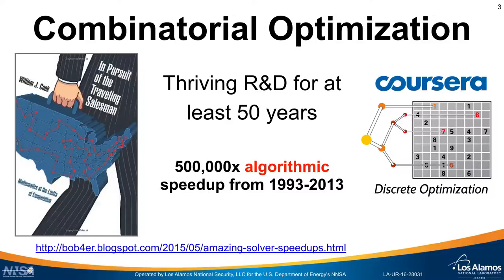Combinatorial optimization is nothing new. This has been a thriving area of research and development for at least 50 years. If you're interested, I would recommend taking a look at In Pursuit of the Traveling Salesman, a chronicle of how that problem has been improved over many decades, or go to Coursera and take the Discrete Optimization course to learn about how these problems are solved in practice.